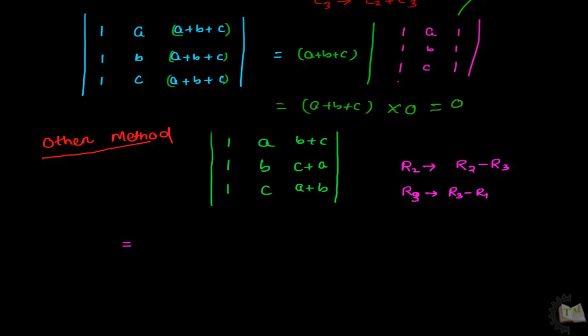Accordingly subtract these terms. First row will remain same that is 1, a, b plus c, and the second row R2 will be R2 minus R3 means 1 minus 1 will be 0, b minus c will be b minus c, c plus a minus a plus b it will be c minus b.